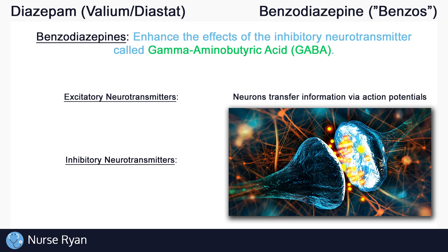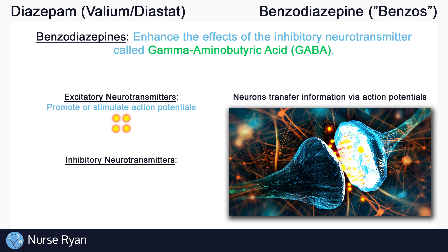We have excitatory neurotransmitters and inhibitory neurotransmitters. These little yellowish-red circles here are the excitatory neurotransmitters. You can think of excitatory neurotransmitters as the ones that are excited — the ones that are promoting or stimulating action potentials, exciting or encouraging whichever neurons that they're acting on. This means that information can travel more easily or more quickly from neuron to neuron.